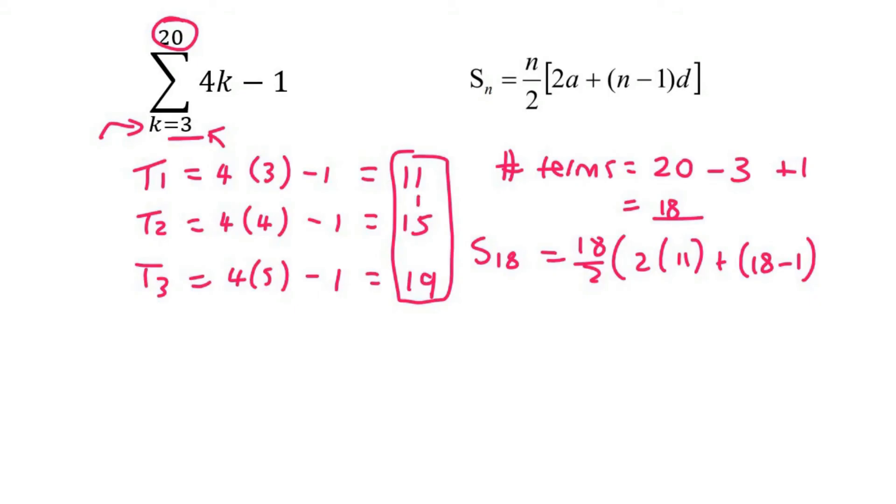And then D, which is the difference, is you can see we're plussing four. So that'll be your common difference. And so that's going to be 810.